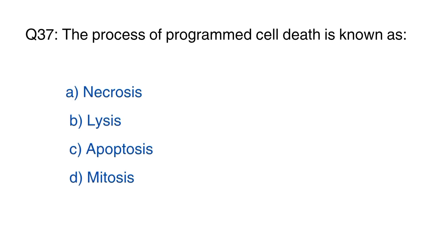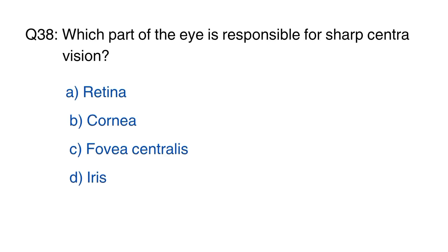Question number 37. The process of programmed cell death is known as? The right option is C, apoptosis.